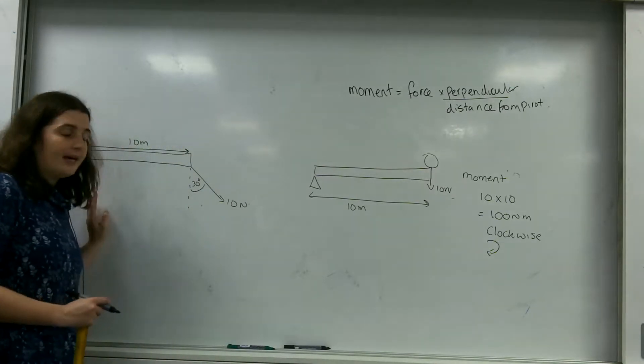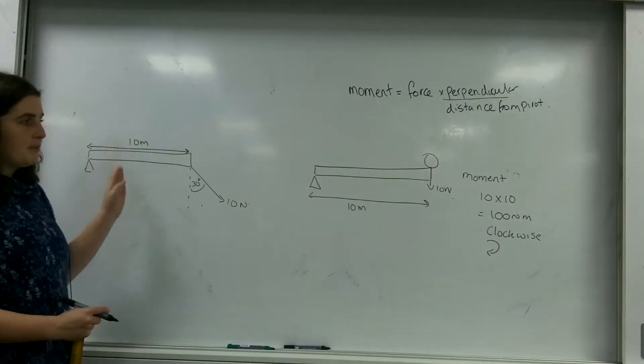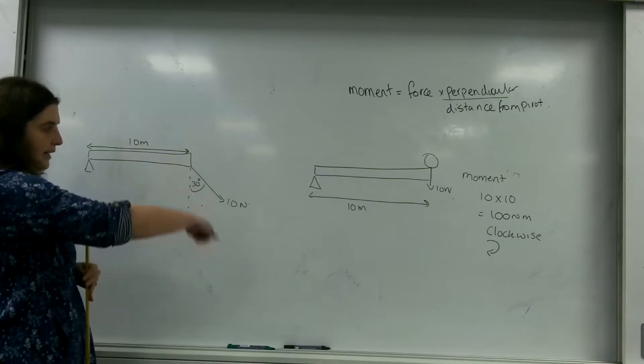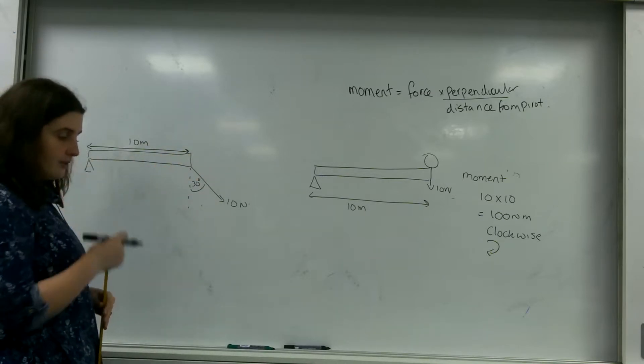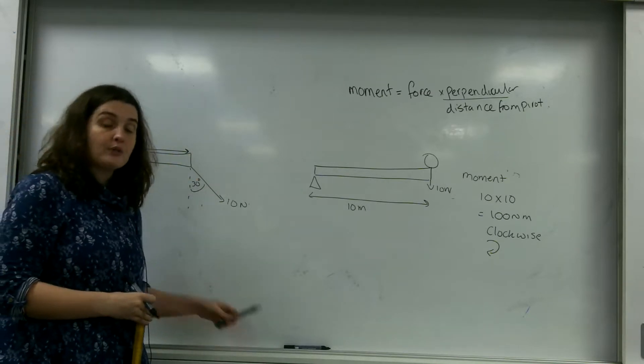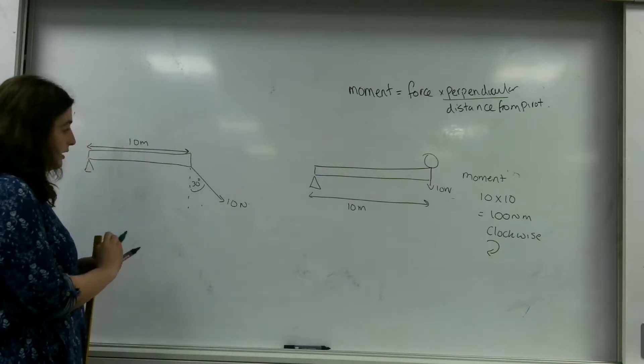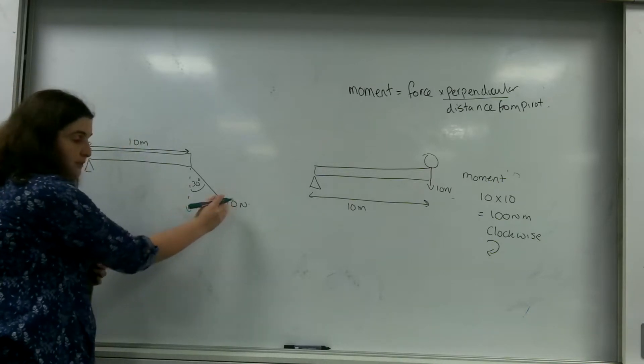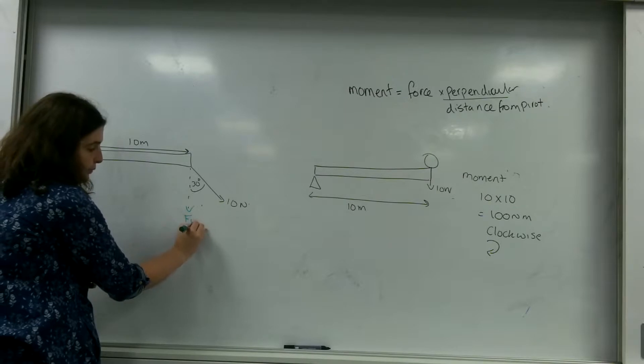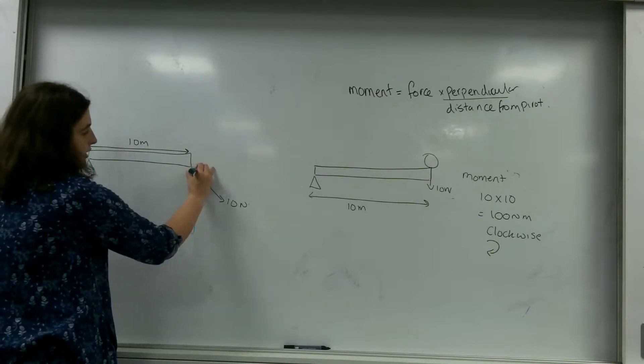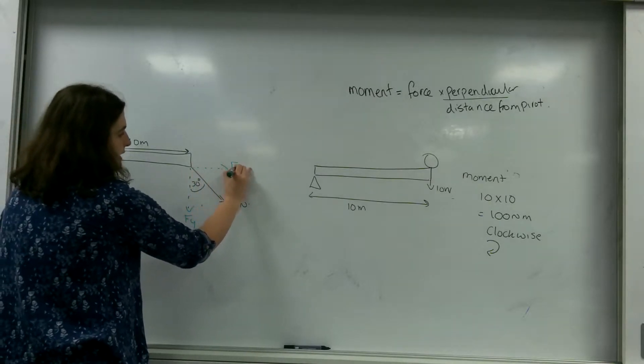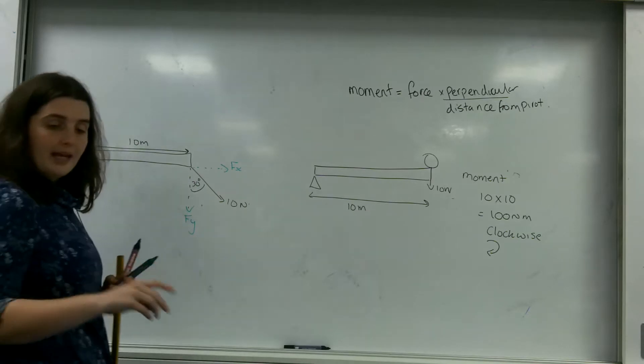And this is an example here, where I've got the same 10 metre beam, but this time I'm pulling it at 10 newtons. And this is where taking components comes in. So I've got some of this force acting in this direction, I'm going to call that y. And some of this force is acting in this direction, I'm going to call that x.